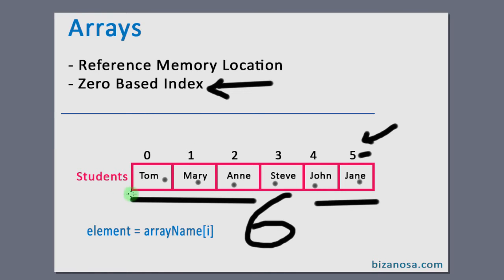So if I want to access the student Tom, I will use the name of the array student, and the index which is zero. So an array is a zero based index.